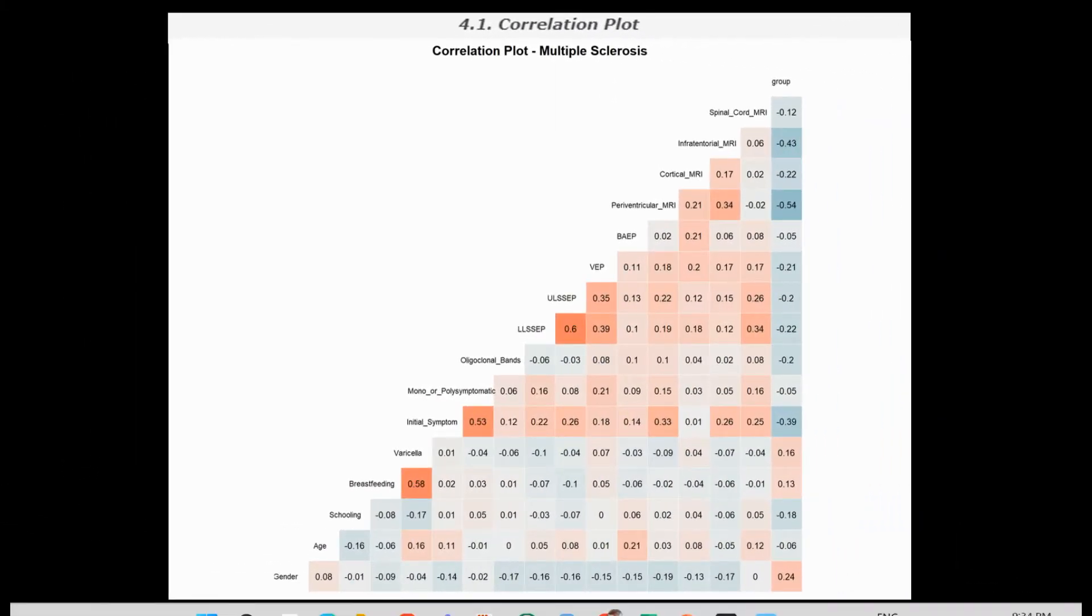Here is the correlation plot. Positive and negative signs represent the direction, and intensity of the color represents magnitude of the correlation. This visual representation helps quickly identify patterns and relationships within the data. For instance, darker or more intense colors may indicate stronger correlation.